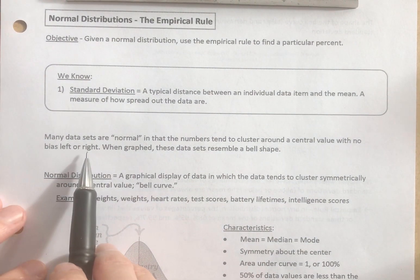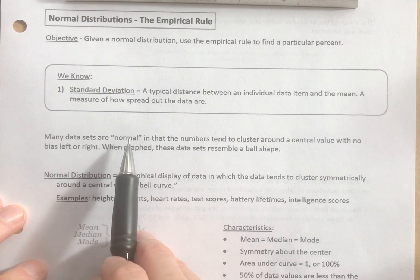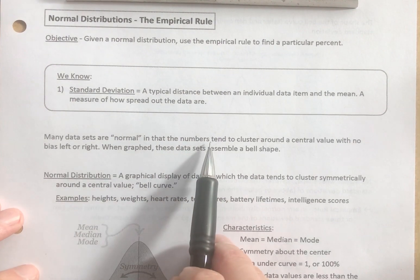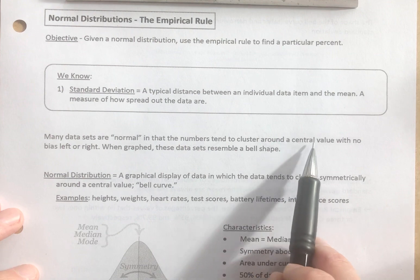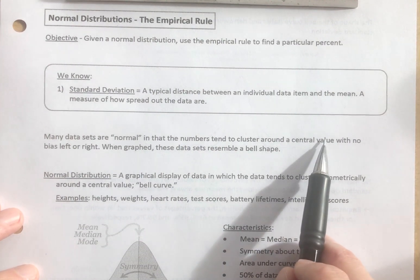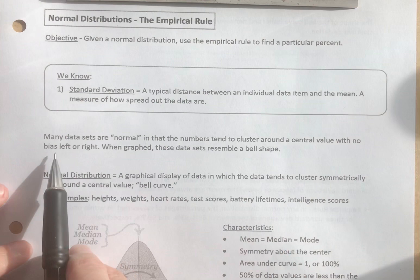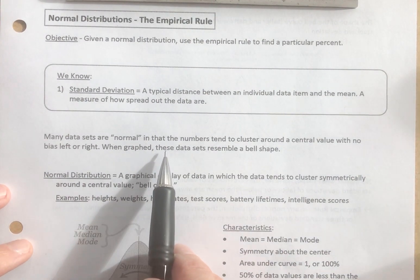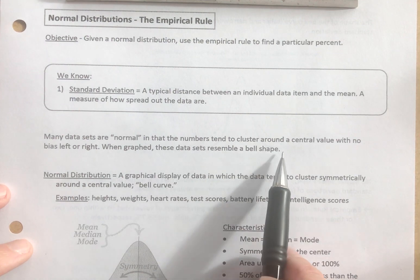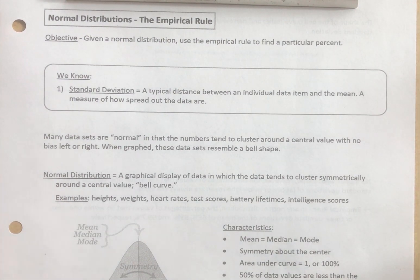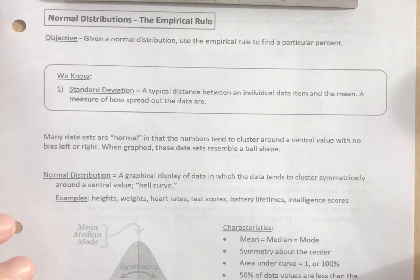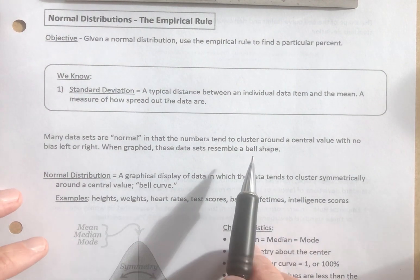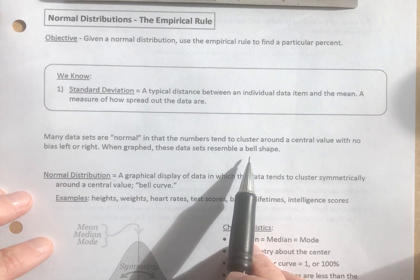As I just mentioned, many data sets are normal, in that the numbers tend to cluster around a central value — they tend to cluster around the mean — with no bias to the left or to the right. When graphed, these data sets resemble a bell shape. You've probably seen this in news items that involve statistics, or various graphs that talk about the bell curve or a bell shape.